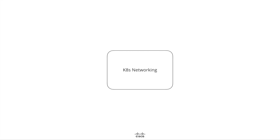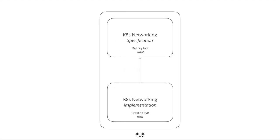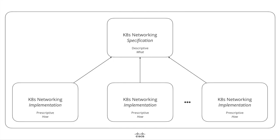Kubernetes networking is a core abstraction of Kubernetes. It ensures components within cluster boundaries and components across cluster boundaries can communicate. Kubernetes networking is split into the Kubernetes networking specification and the Kubernetes networking implementation. In fact, many alternative implementations, called Kubernetes network plugins, exist today.